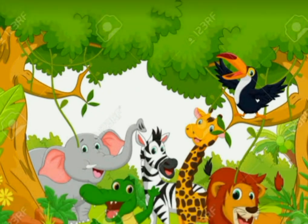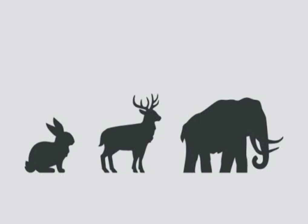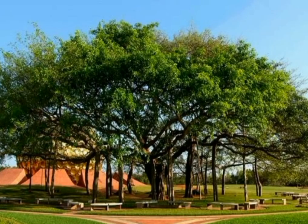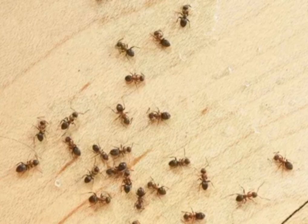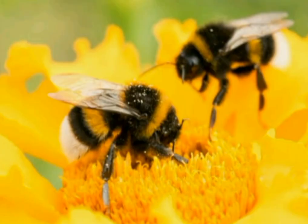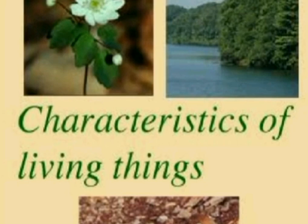All kinds of plants and animals are living things. Are all plants and animals of the same size? No, they are not. Some are big and some are small. Some living things like the great banyan tree and the elephant are very big, while some such as the ant and bee are very small. Even though living things are different from each other, they all have some common features.